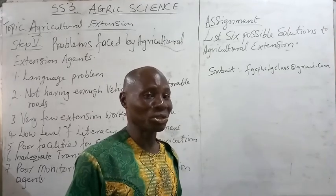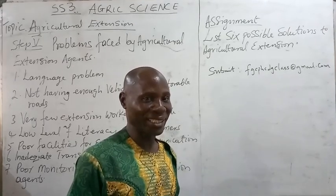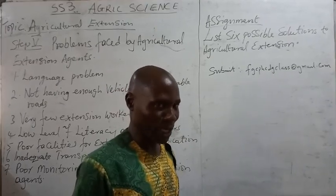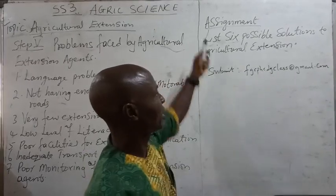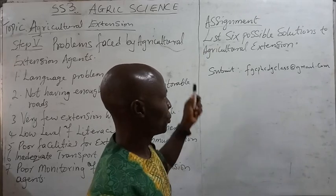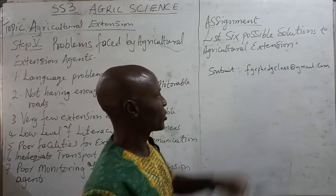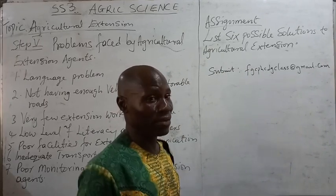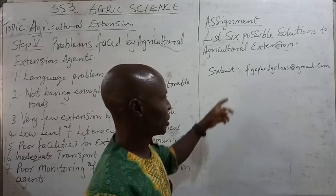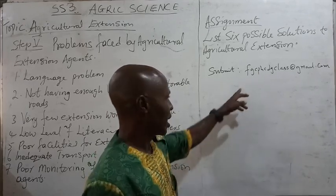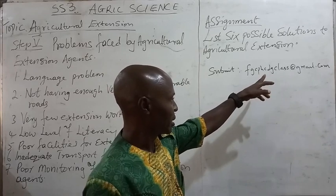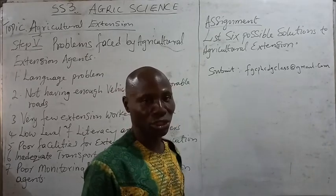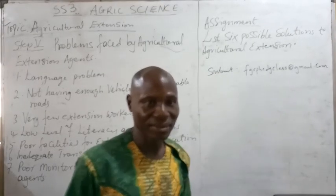Students, I cannot do it alone — you have to do your bit to make the work a smooth one. Here on the board is an assignment for you: list six possible solutions to agricultural extension problems. This assignment is to be submitted to the email address on the board: fgcphcdgclass@gmail.com. Thank you.